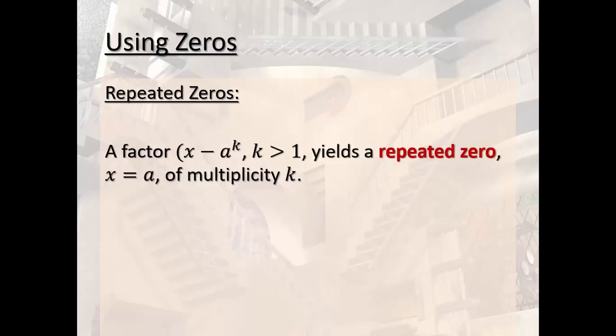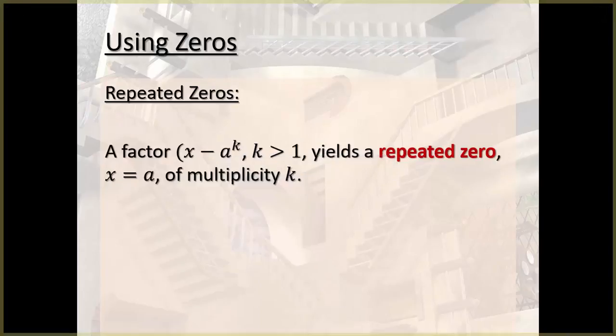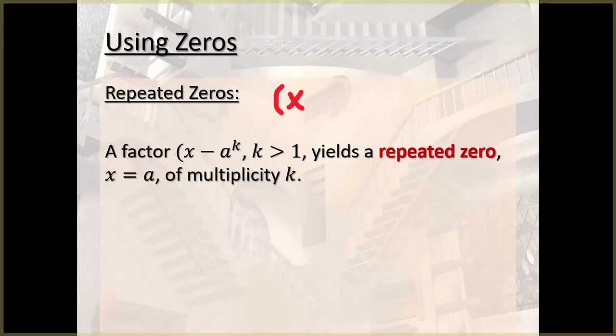All right, so let me just, before we get too far into it, let's say that you factored out a polynomial completely, and it looked like x minus 2, x plus 1 squared. All right. 2 is a zero.